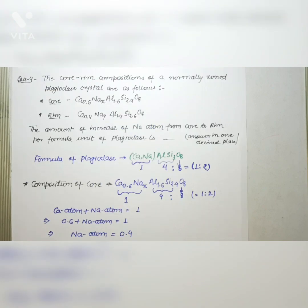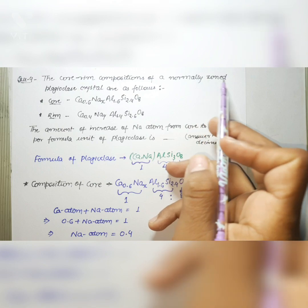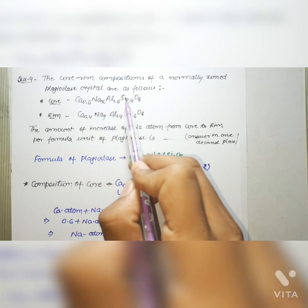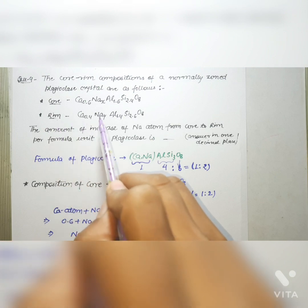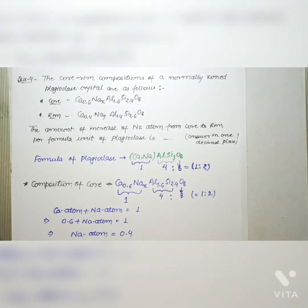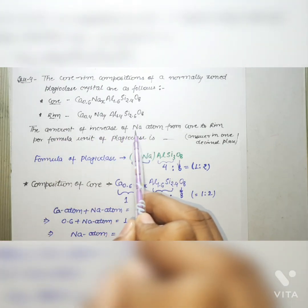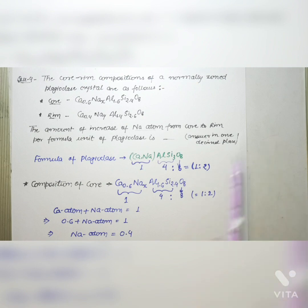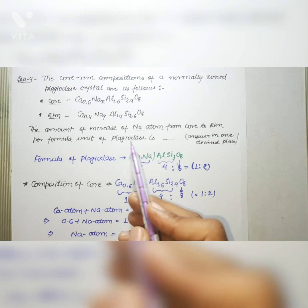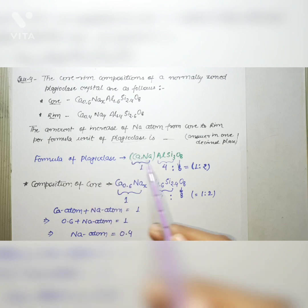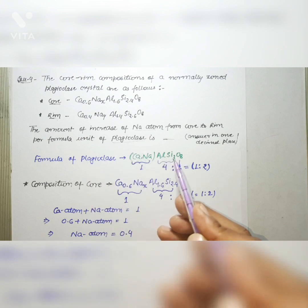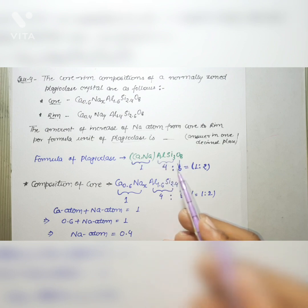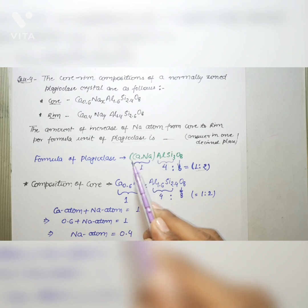The next question gives core and rim compositions of a normally zoned plagioclase crystal. Core composition: Ca₀.₆NaₓAl₁.₆Si₂.₄O₈. Rim composition: Ca₀.₄NaᵧAl₁.₄Si₂.₆O₈. The question asks for the amount of increase of sodium atoms from core to rim per formula unit. The general plagioclase formula is CaNaAlSi₃O₈, where Al+Si contributes 4 and there are 8 oxygens, maintaining a 1:2 ratio. Ca and Na together total 1.